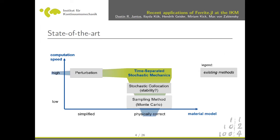There are several approaches. The easiest way is Monte Carlo simulation — you reproduce the stochastics in your finite element code, take the Young's modulus with a standard deviation, calculate with different values, and repeat ten thousands of times to get your statistics. This is physically correct but takes forever. The perturbation method is so simplified you can't be sure it's correct, and stochastic collocation convergence is uncertain.